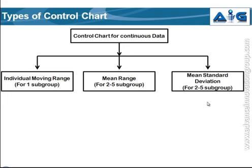Control charts for continuous data and discrete data are different. There are certain control charts we prefer for continuous data and certain ones for discrete data. For continuous data, we generally choose three options. The first is the Individual Moving Range chart, called the IMR chart. The second is X-bar R, or mean-range chart. The last is the mean standard deviation chart, or X-bar S chart.